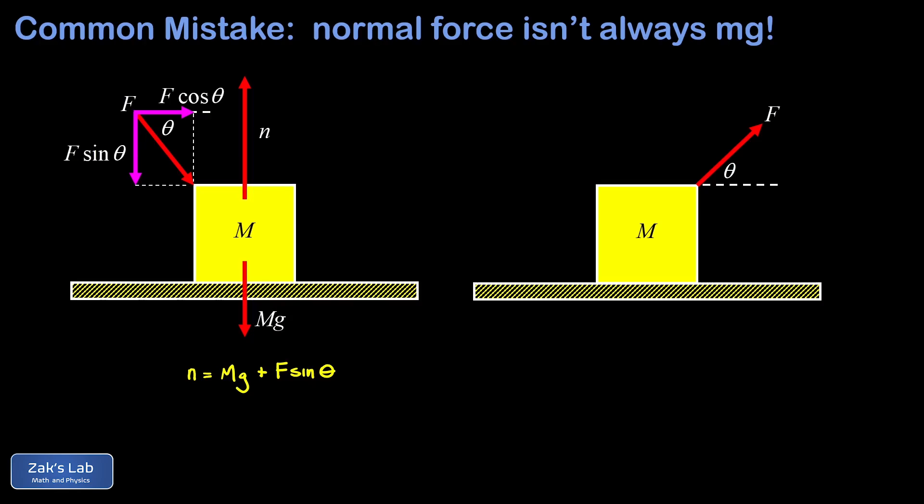In our second example, we have kind of the reverse case where the external force has an upward component instead. And again, we expect that the normal force is changed by the fact that we're tampering with the perpendicular direction. So we complete the force diagram and this time when we balance the forces perpendicular to the surface, we find that n plus F sine theta, since that component of the force points upward, that has to be equal to the weight mg.